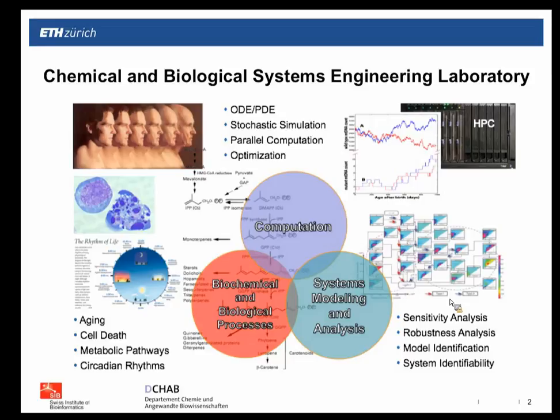The word 'ensemble' refers to ensemble modeling, where we track a family of mathematical models for biological networks to represent uncertainty. I'll start with a short introduction about my lab, the Chemical and Biological Systems Engineering Lab at ETH. As an engineer by training, our research lies at the intersection of systems modeling and analysis, building mathematical models of biological networks.